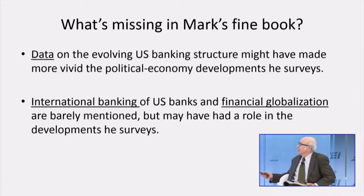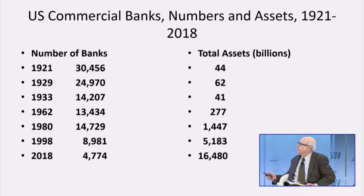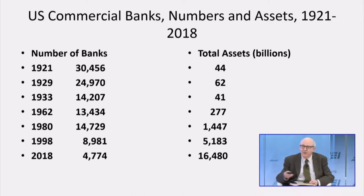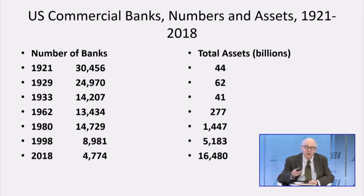Those are the two things I wanted to talk about today. Here is some data on just the number of banks and the total assets of banks in the United States from roughly 100 years ago. The peak number of banks was in 1921, 98 years ago. I've studied 200 years of American banking history — from three banks in 1790, one in New York, one in Boston called the Massachusetts Bank, and one in Philadelphia called the Bank of North America. By 1921, we had 30,000 plus banks in this country.